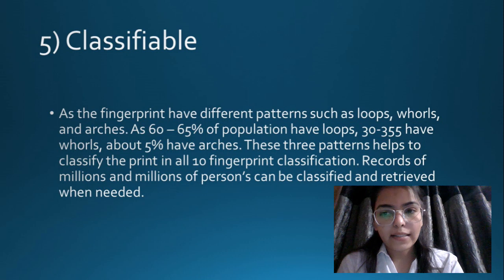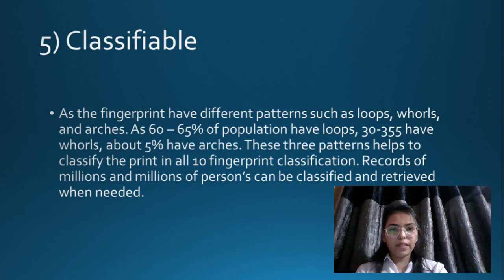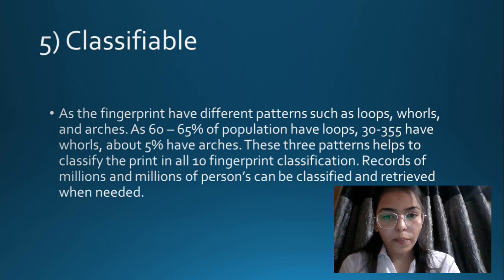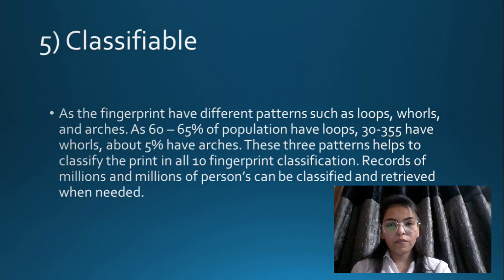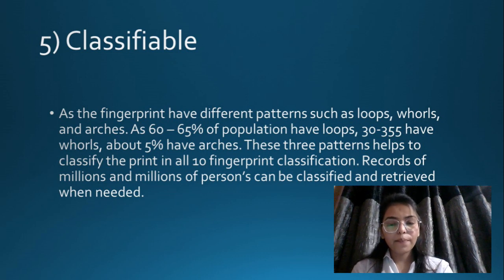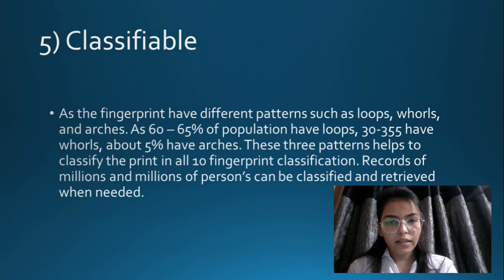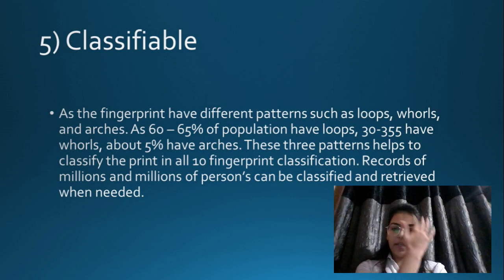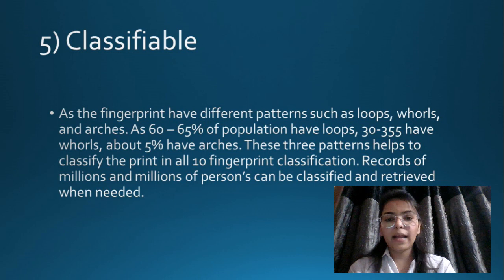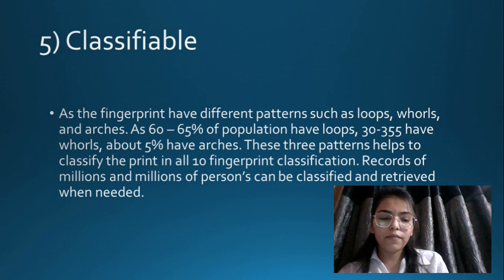According to principle five, fingerprints are classifiable. As fingerprints have different patterns such as loops, arches, and whorls, about 60 to 65% of the population have loops, 30 to 35% have whorls, and about 5% have arches. These three patterns help classify all ten fingerprints. Records of millions of people can be classified and retrieved when needed.